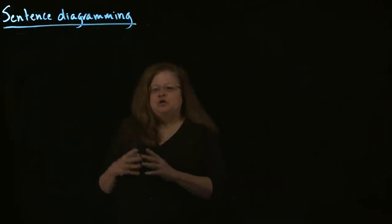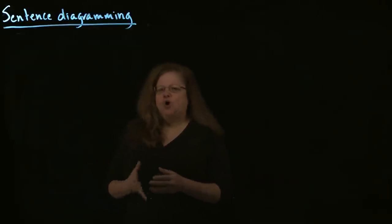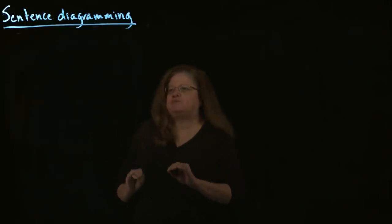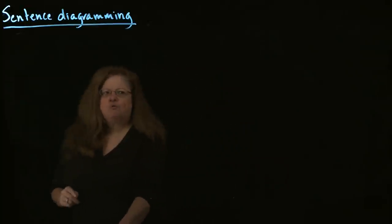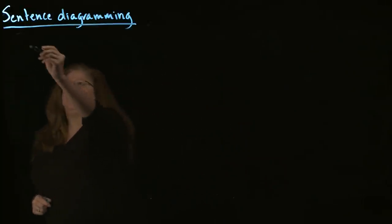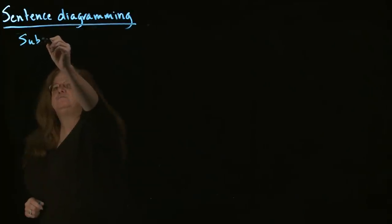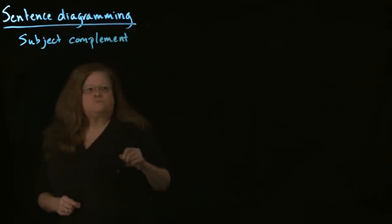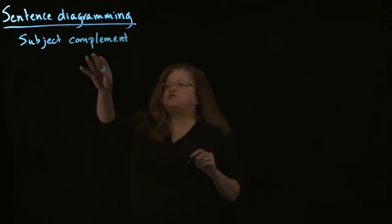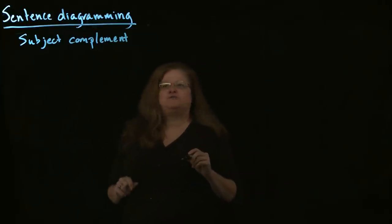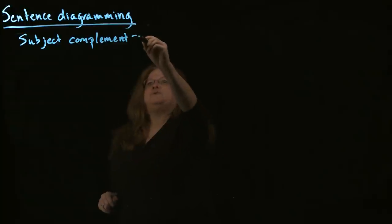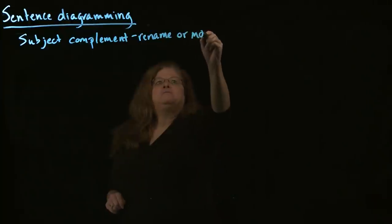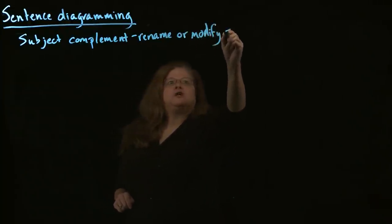Now we're going to proceed to doing something even more complicated with our sentence. We've looked at sentences with the basic core of subject, verb, and direct object. What we're going to look at now is something called the subject complement. This is something that's going to reflect on the subject of the sentence — either renaming it or modifying it.